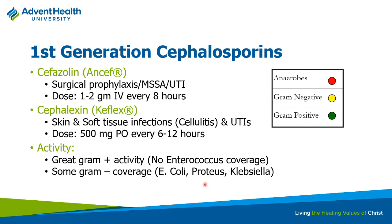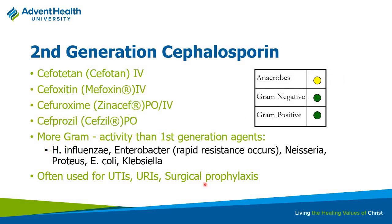First-generation cephalosporins do have some decent gram-negative coverage like E. coli, Proteus, and Klebsiella, but they really don't cover much in terms of anaerobes. The second-generation cephalosporins — cefotetan, cefoxitin, cefuroxime, cefprozil — are probably the least used group of cephalosporins clinically. They have a little better gram-negative coverage, so you may see them used for H. influenzae, Neisseria, and Proteus. Most often used for UTIs, upper respiratory tract infections, and occasionally surgical prophylaxis, but the first-generation is used much more commonly for that.